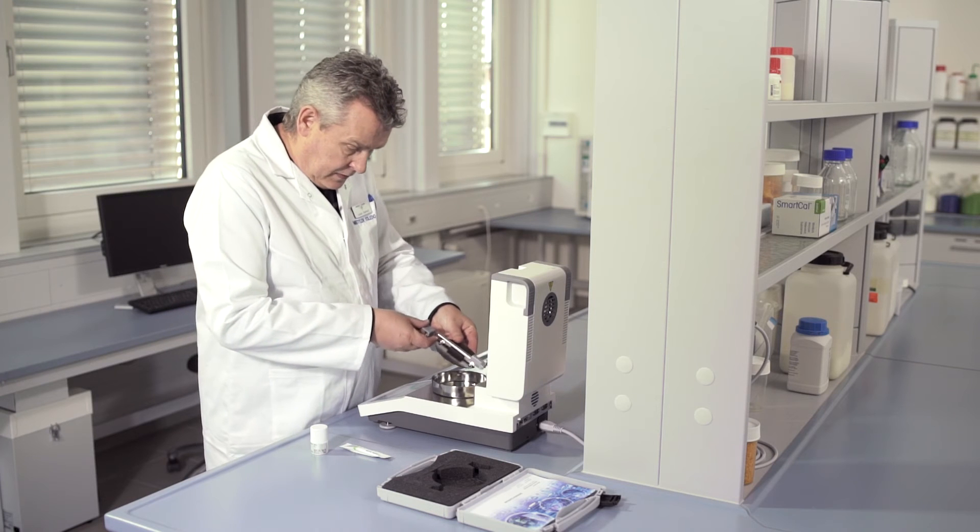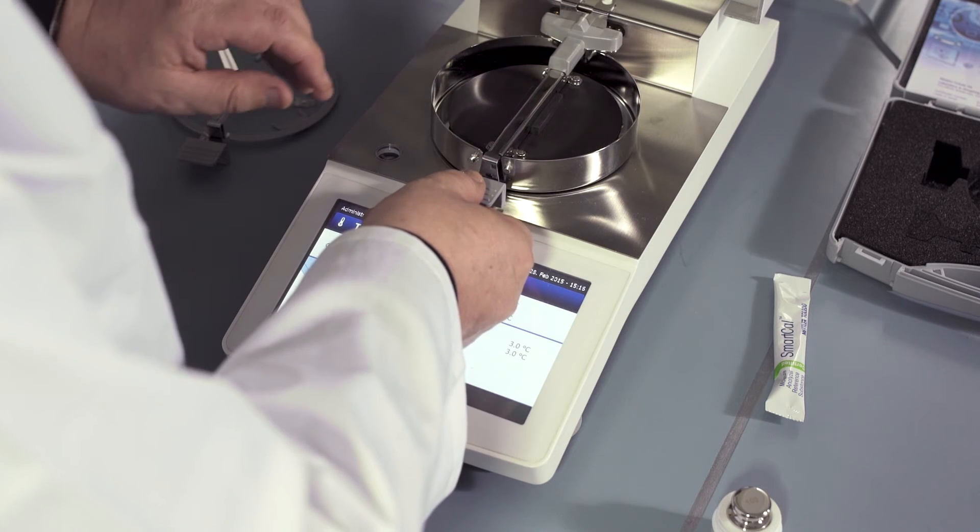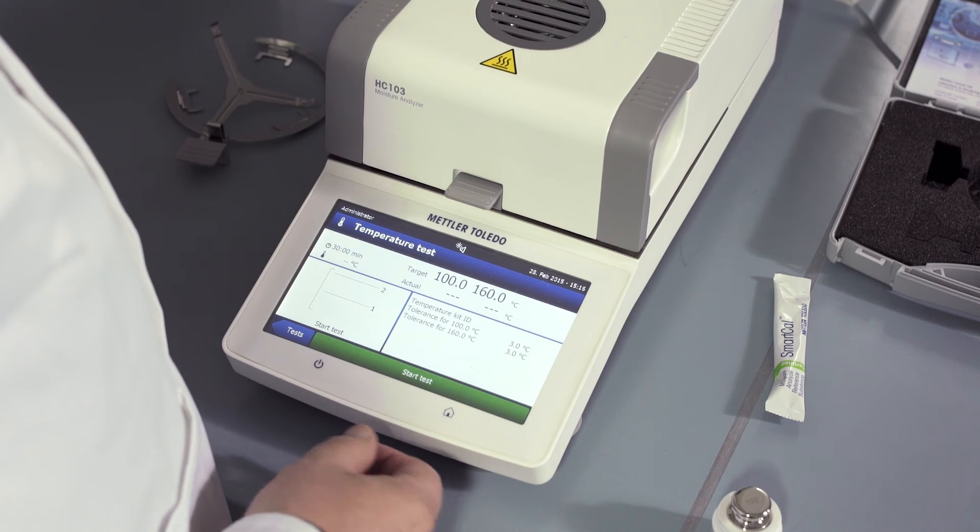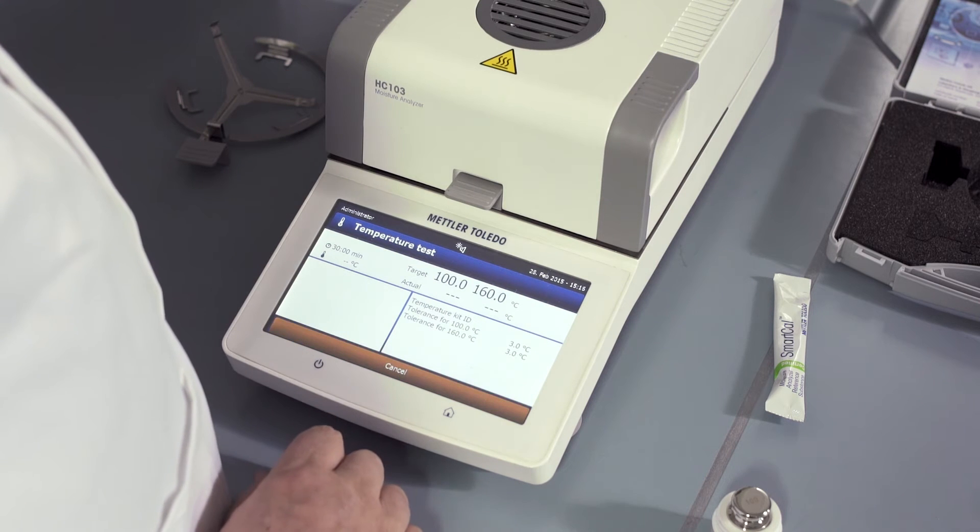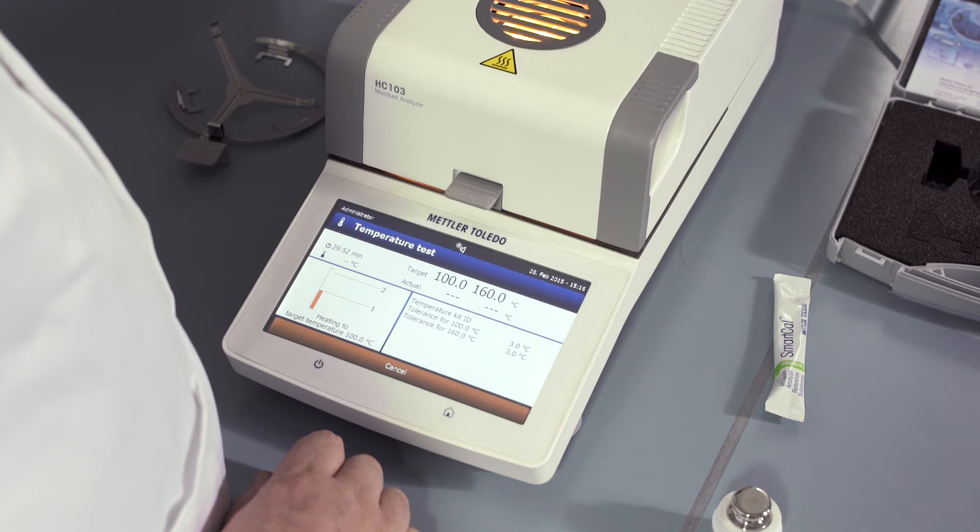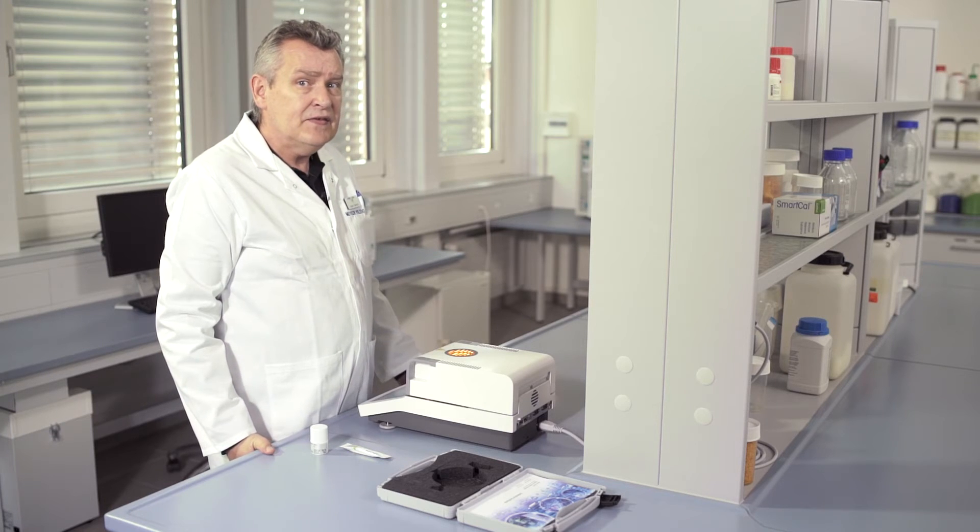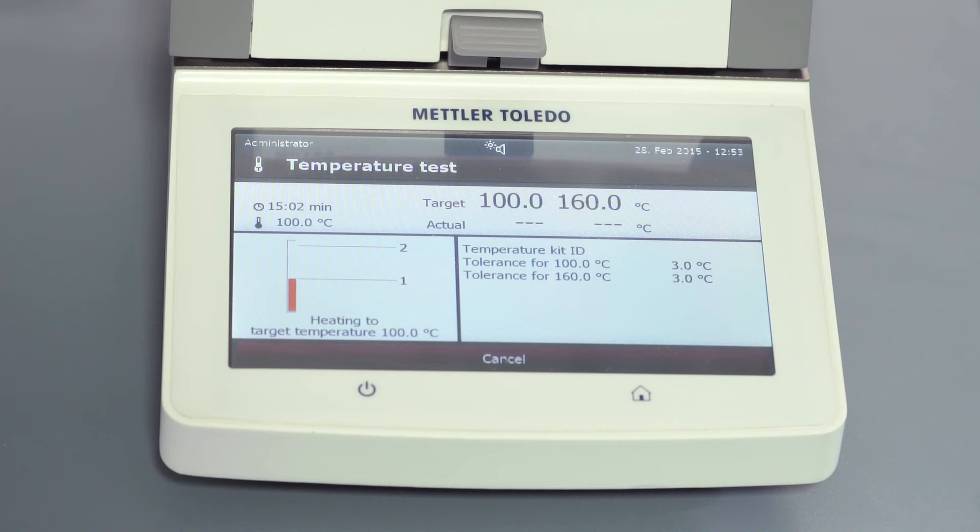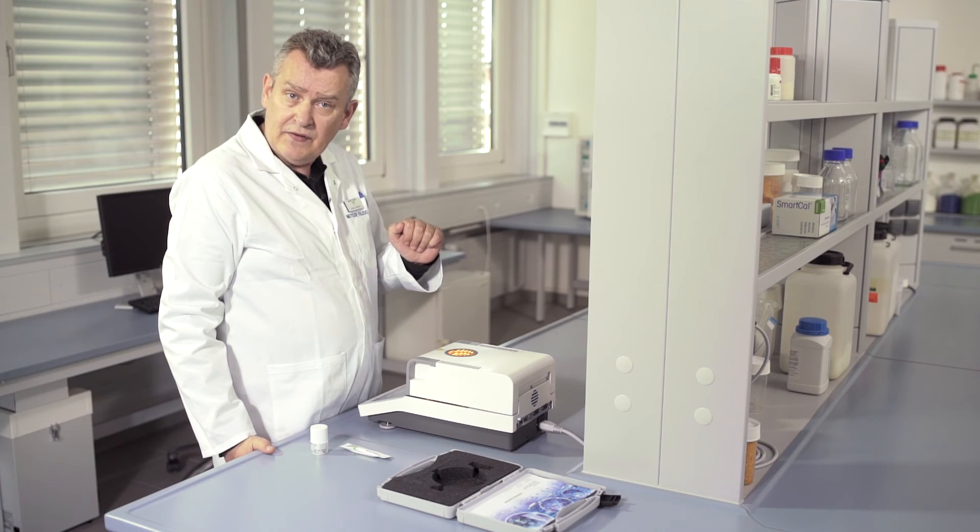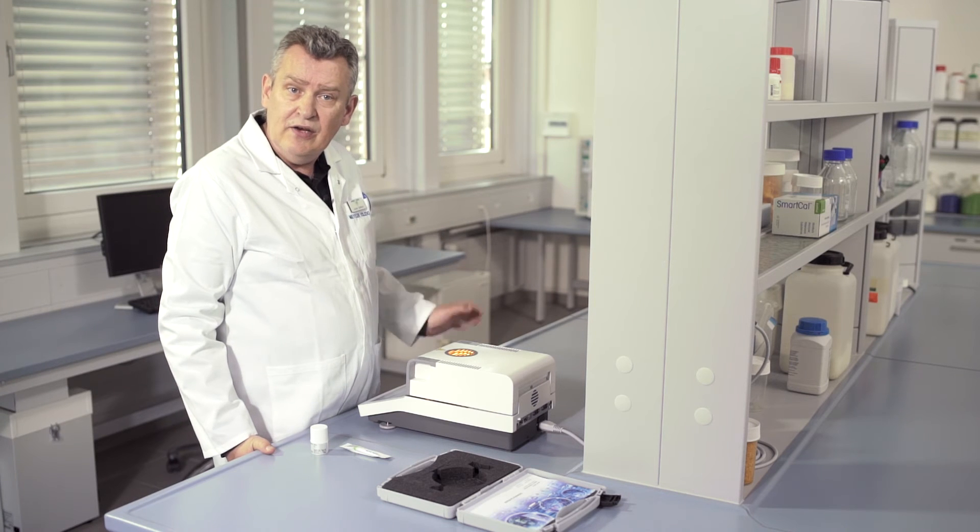The instrument instructs you to place the electronic temperature calibration kit like so, then close the lid and start the test. The temperature is tested at two points: at 100 degrees centigrade and at 160 degrees centigrade. After 15 minutes, the temperature at the first point is automatically read, and then the instrument will heat up to 160 degrees for a further 15 minutes and then the value is automatically read again.